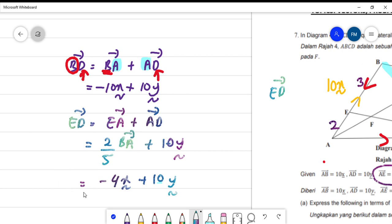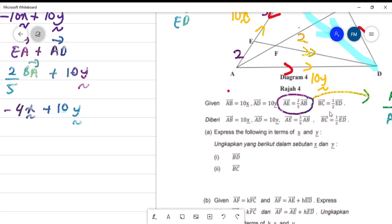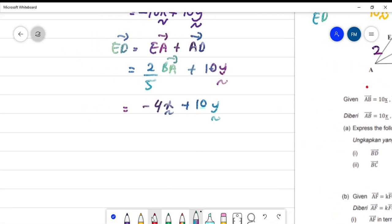So we've got ED. And then go back using this: BC is equal to 1 over 2 ED. So therefore BC is equal to 1 over 2 ED. This is your ED, so negative 4 divided by 2 gives negative 2x plus 5 vector y. So we've got it. Then done with question A.